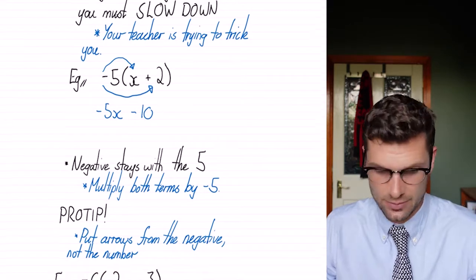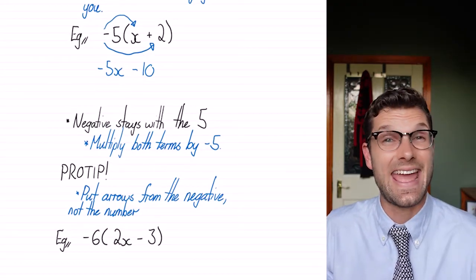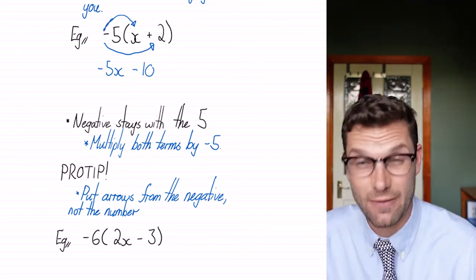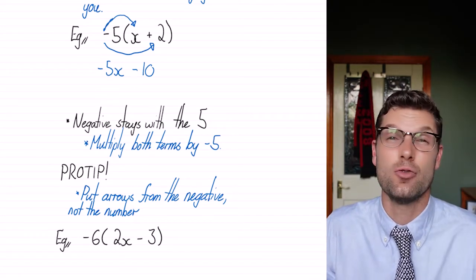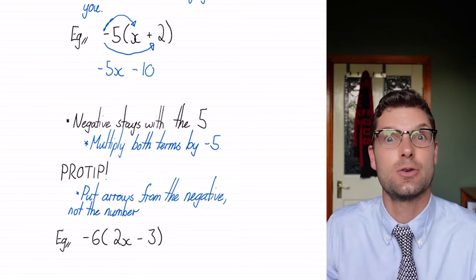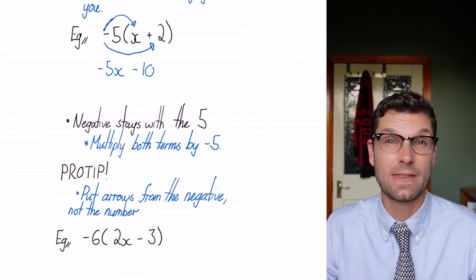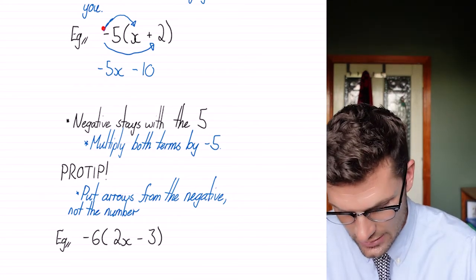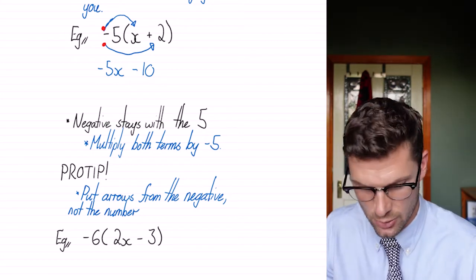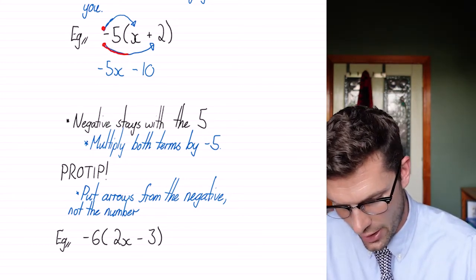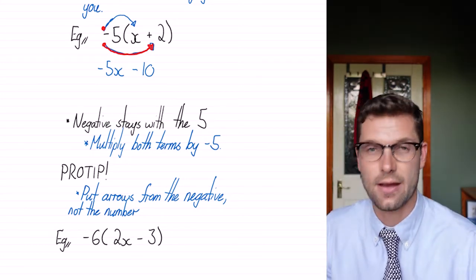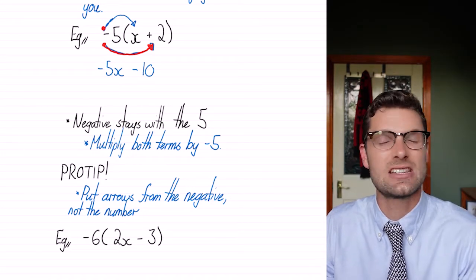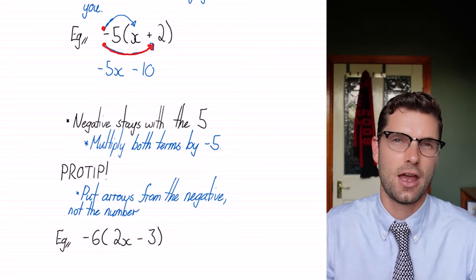So my pro tip for these ones is put the arrow in front of the negative, okay? So you can see up here, I put my arrow's coming from that minus five, just to make sure I don't forget to put it into both terms. If you are struggling with this, I would highly recommend if you throw this at the front, that minus five times by plus two, you can put that in a calculator and you won't have to do any work. You'll just see that second number change and you'll be sweet.